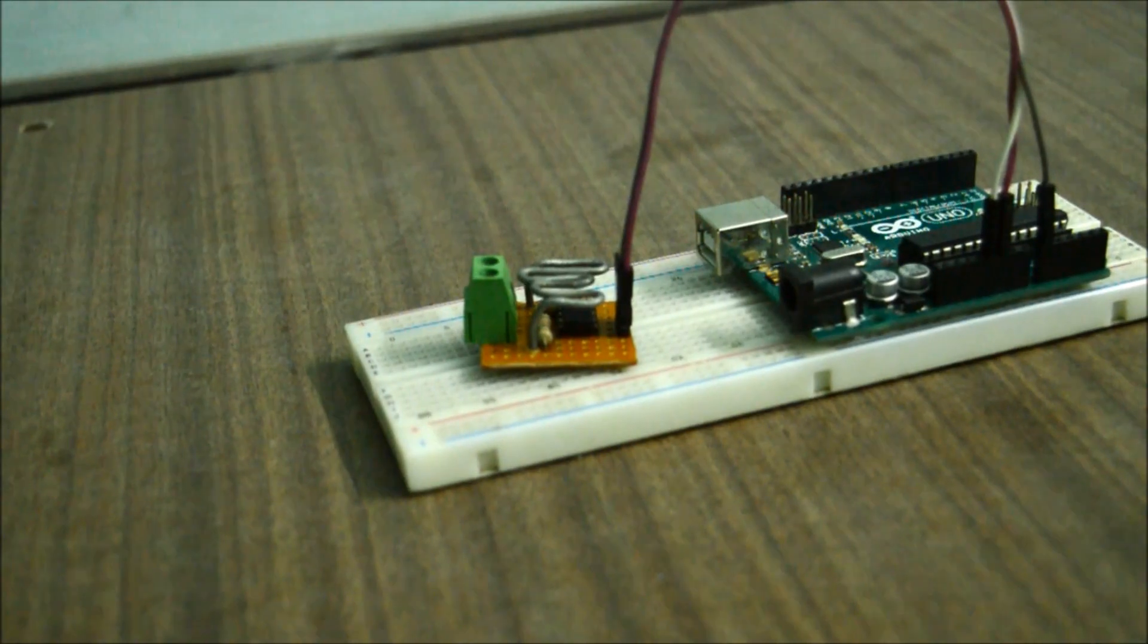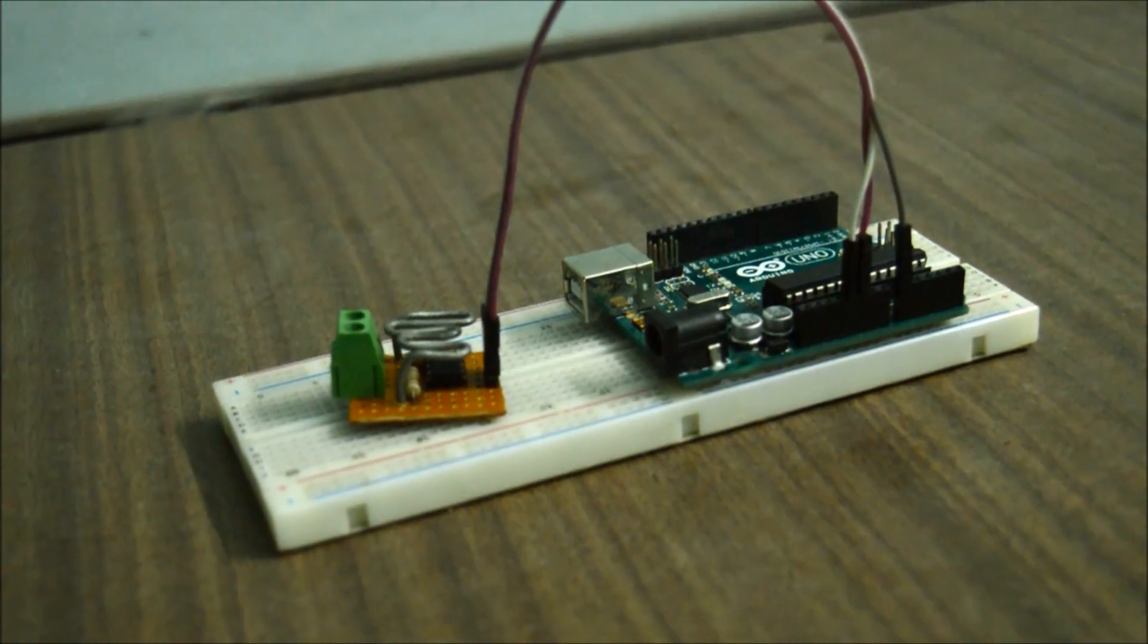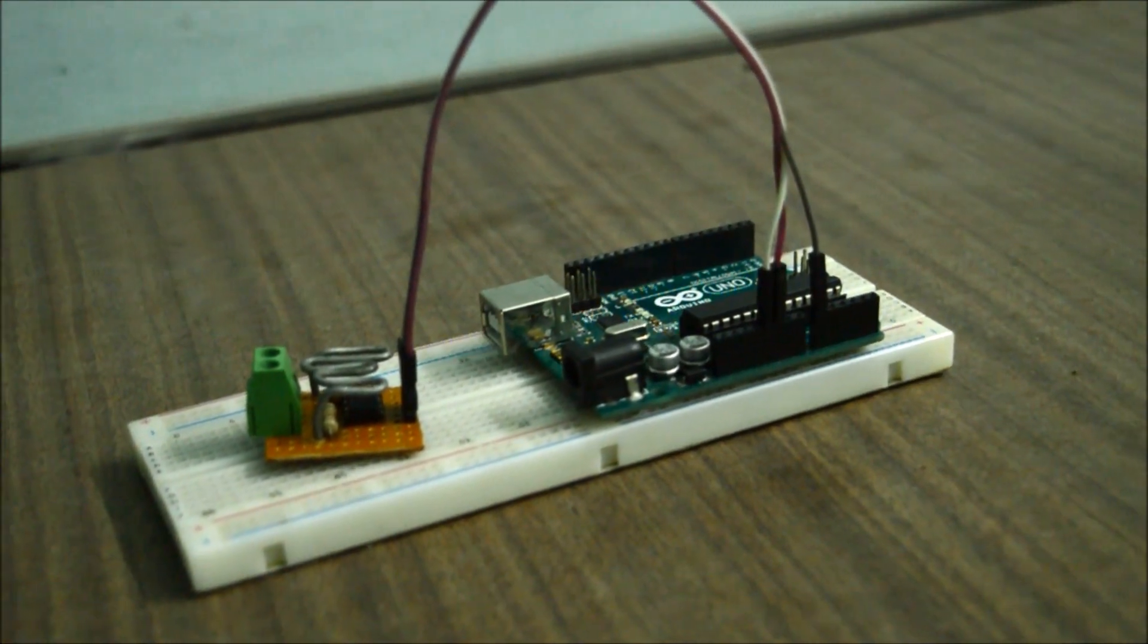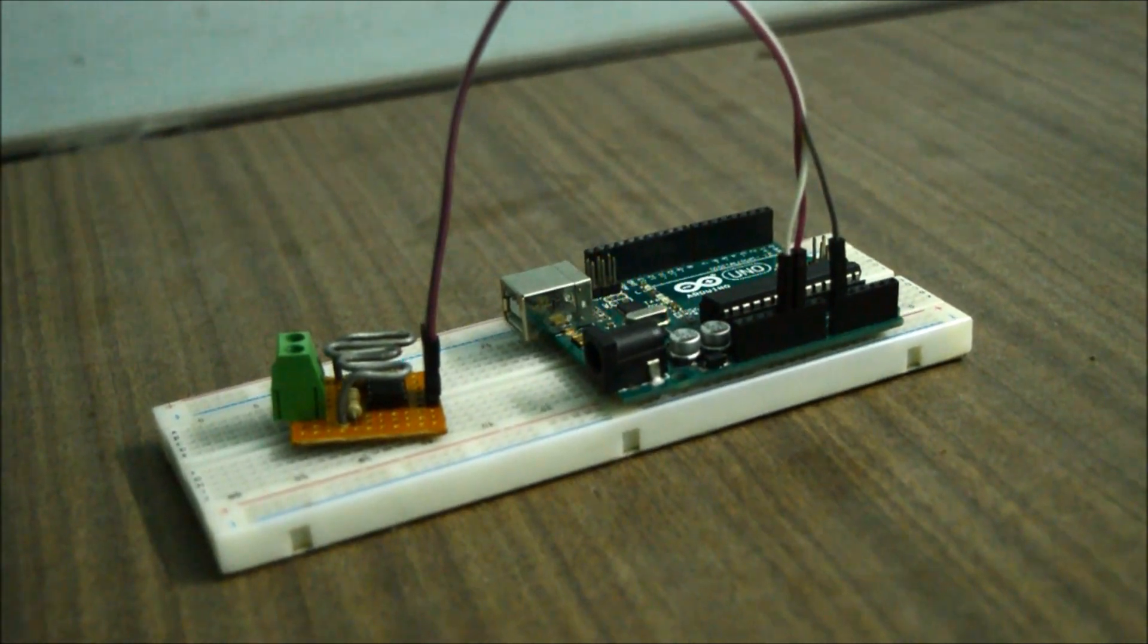What's good you guys, welcome to my YouTube channel. Today we'll be looking at how to make a DIY current sensor using a homemade shunt and interfacing it with Arduino to get some good readings. Let's get started.